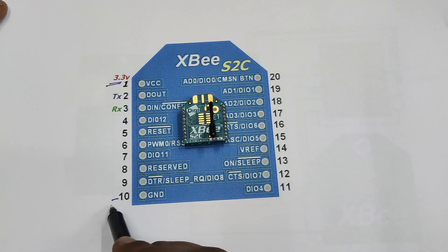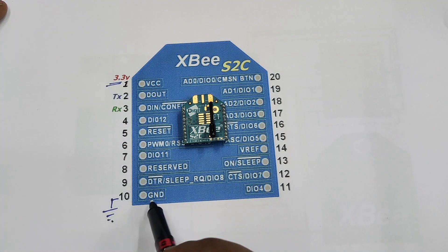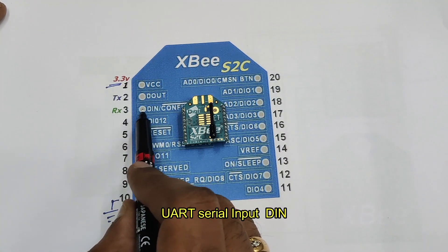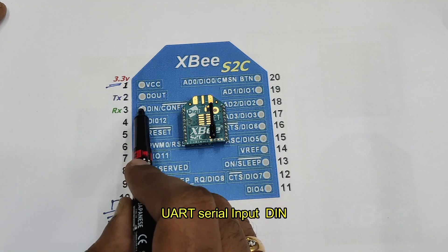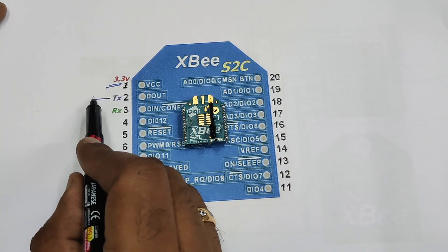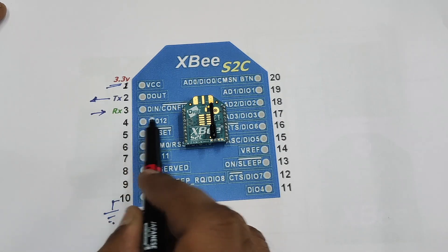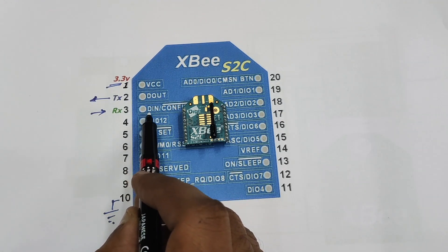Pin 2 is TX pin which is called DOUT and pin 3 is RX pin which is also called DIN. Data received at pin 3 DIN from a microcontroller is transmitted wirelessly and data received from a distant XBee is spit out at pin 2 DOUT.